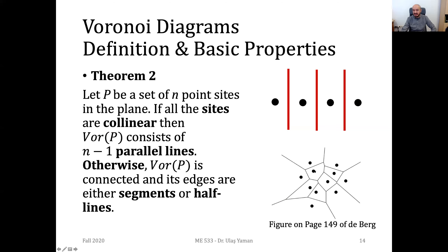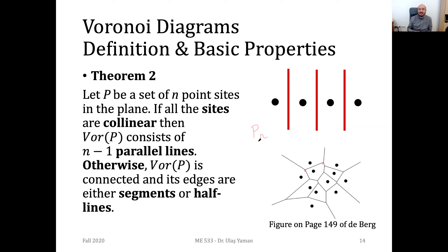The set of Voronoi sites is the only input to the Voronoi computation. The black point sites are given as inputs and we do not need to determine them — we need to compute the resulting vertices and edges. The set of sites is the only input for computing the Voronoi diagram.